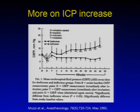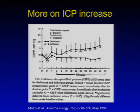Different agents can have different time courses for ICP changes. As we continue to administer desflurane through the case, cerebrospinal fluid pressure rises throughout, whereas it stays relatively flat for isoflurane. For neuro cases, we usually like to use something like desflurane or sevoflurane because they can come off fast, but we need to keep in mind that intracranial pressure can rise as the case goes on with those agents.